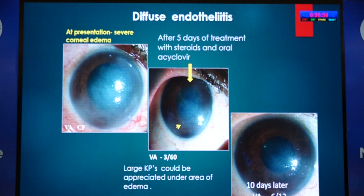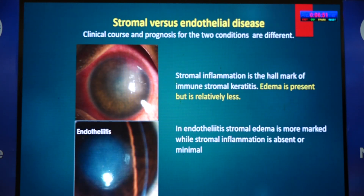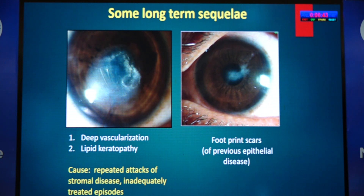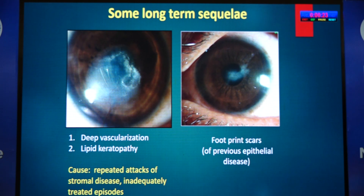In stromal disease, inflammation is predominant; in endothelial disease, edema is predominant — although both can coexist. If inadequately treated, long-term sequelae include steel-wool keratopathy, chronic vascularization, and lipid keratopathy requiring keratoplasty. A useful clue: if you are confused about one eye, look at the other eye for footprint scars — since epithelial disease tends to alternate — which confirms HSV keratitis.